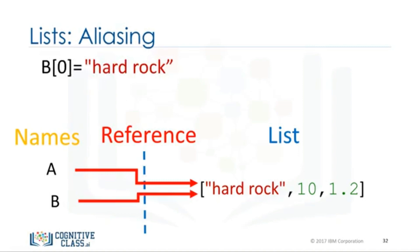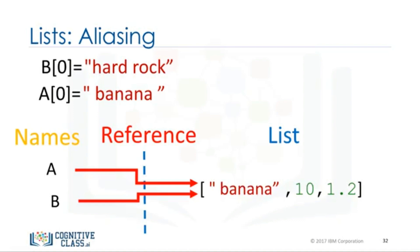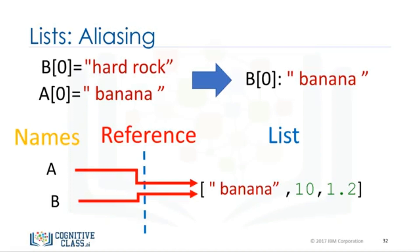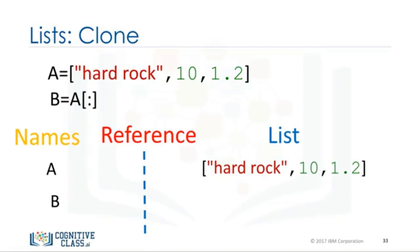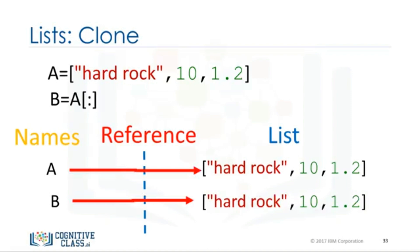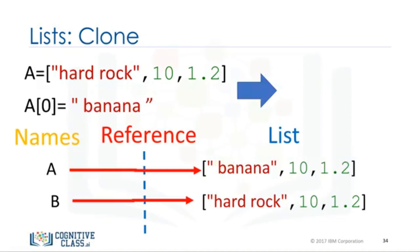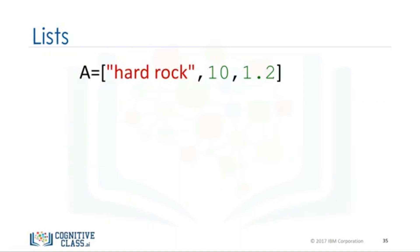We know from the list slide that the first element in B is set as hard rock. If we change the first element in A to banana, we get a side effect. The value of B will change as a consequence. A and B are referencing the same list. Therefore, if we change A, list B also changes. If we check the first element of B after changing list A, we get banana instead of hard rock. You can clone list A by using the following syntax. Variable A references one list. Variable B references a new copy or clone of the original list. Now, if you change A, B will not change. We can get more info on lists, tuples, and many other objects in Python using the help command.